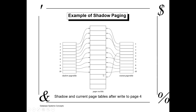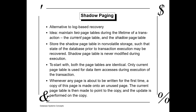The one to N number of pages are not stored in a particular order on the disk. To summarize some key points: before the start of the transaction, both page tables — the current page table and shadow page table — are identical. And only the current page table is used for data item accesses during the execution of the transaction.